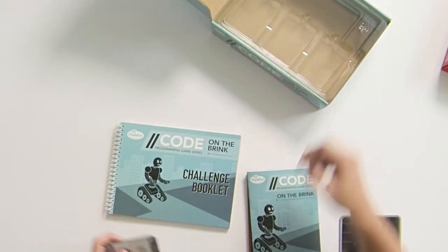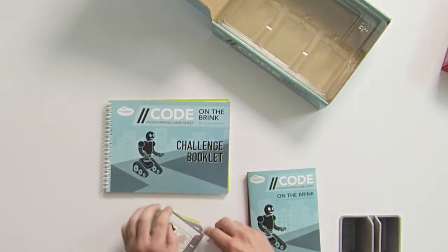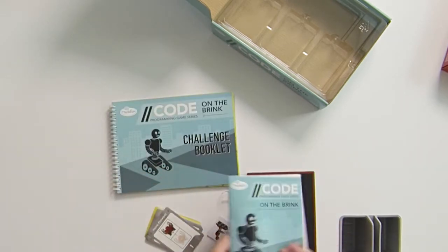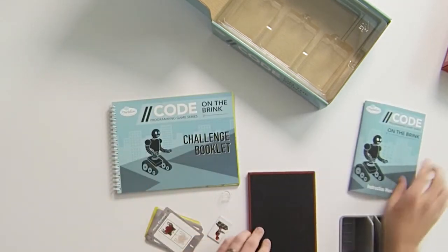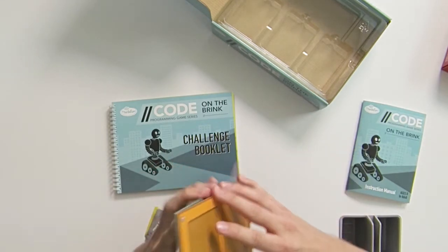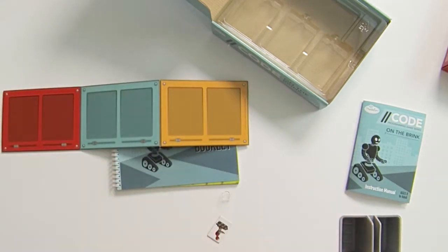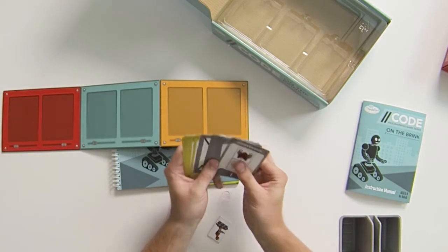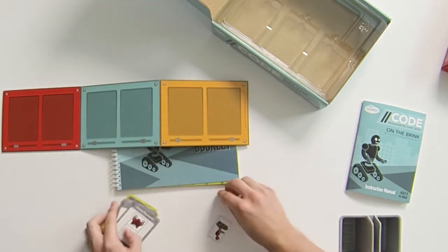In the box we have a challenge booklet which contains our challenge cards and maps, we have instructions, we have our control panel which will help us build our procedures, movement cards, beginner and advanced, and our robot.